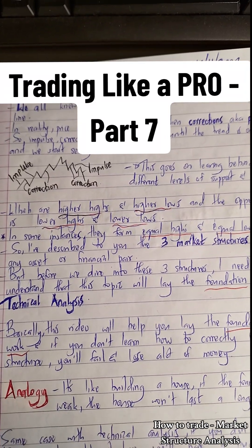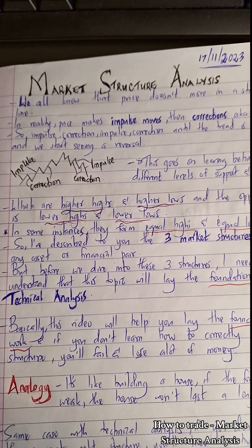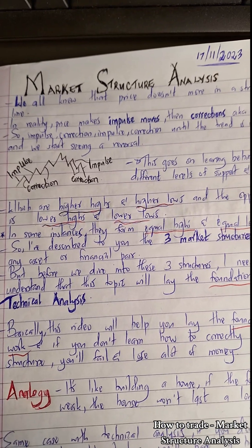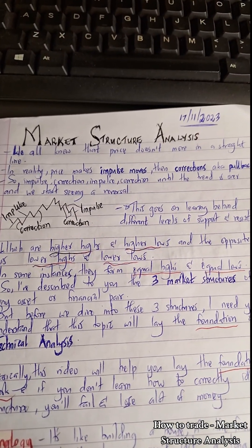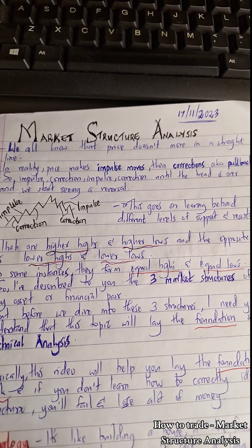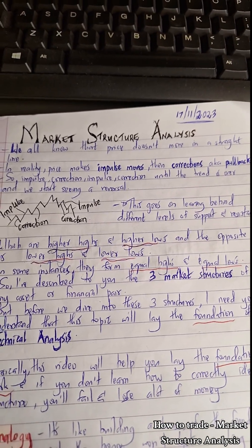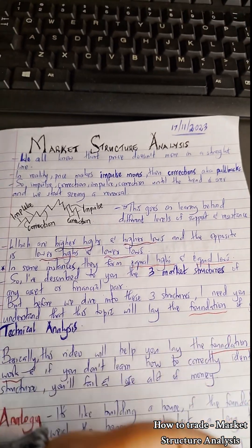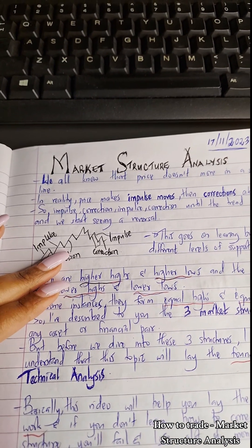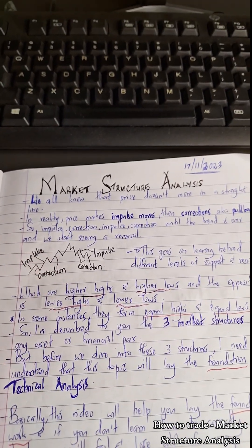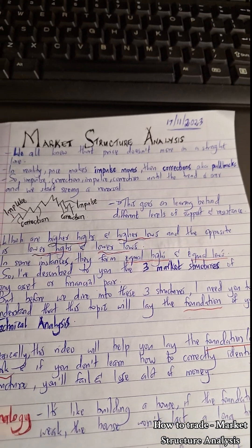This is part 7 of Trading Like a Pro, and today I'm going to take you through market structure analysis. We all know that price doesn't move in a straight line. In reality, price makes impulse moves then corrections — also known as pullbacks — so impulse, correction, impulse, correction until the trend is over and we start seeing a reversal.